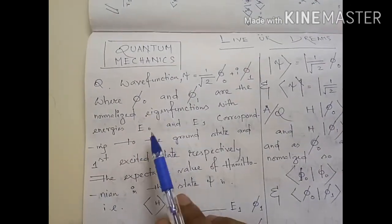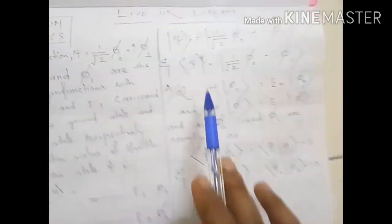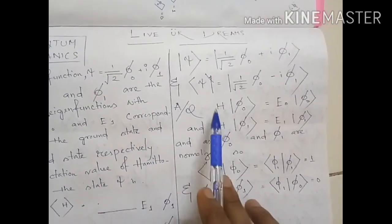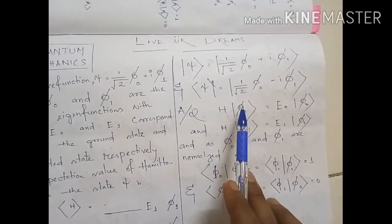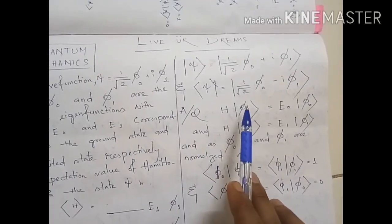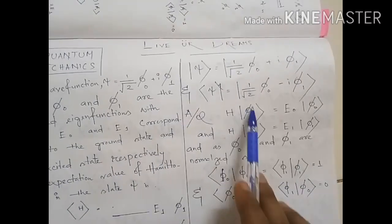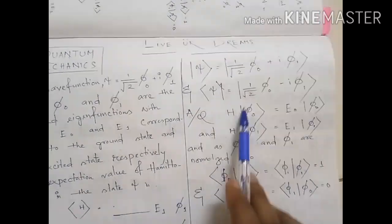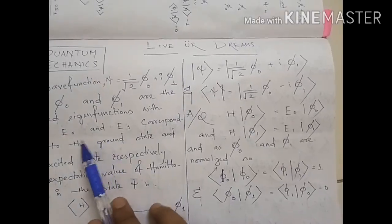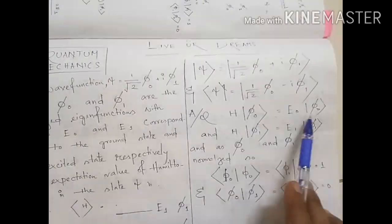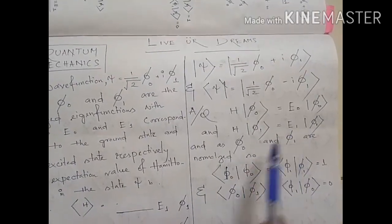Their energies are E₀ and E₁. When we operate the Hamiltonian on a state, it gives its energy eigenvalue. So when we operate on φ₀, as it is the ground state, it gives the ground state energy E₀, and when operated on φ₁ it gives E₁.